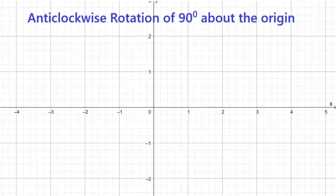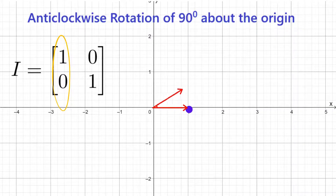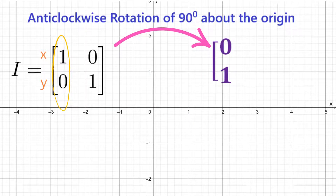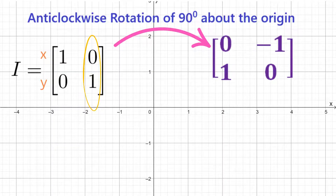To get the matrix for the 90 degrees anticlockwise rotation, we go back to the identity matrix. The values in the first column represent the point (1, 0). Rotate this point 90 degrees anticlockwise and we'll end up at (0, 1), so the first column in the transformation matrix will be (0, 1). The second column represents the point (0, 1). Rotate (0, 1) 90 degrees anticlockwise and we'll end up at (-1, 0), so the second column in the transformation matrix is (-1, 0).